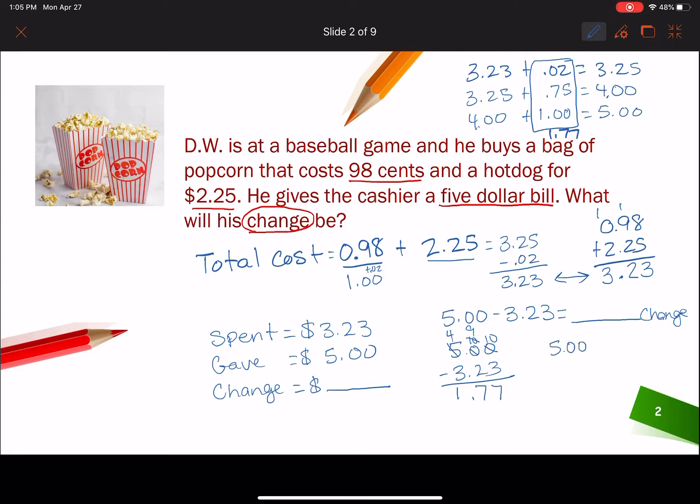I could use the subtract 1 penny trick. And then it becomes $4.99 minus $3.23. And 9 minus 3 is 6. 9 minus 2 is 7. 4 minus 3 is 1. And then we need to make sure we add in that one more penny. And we'll get $1.77. So I have gotten $1.77 every single way that I did it. So I'm going to be pretty confident in my answer that the change is going to be $1.77 after he gives her the $5 bill.